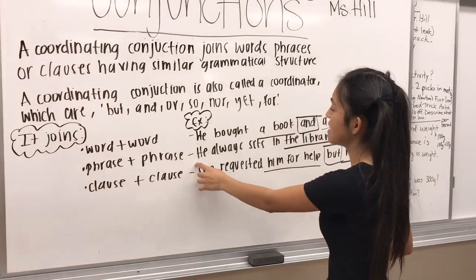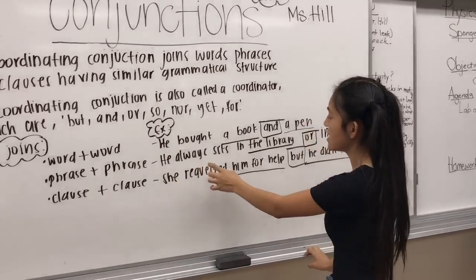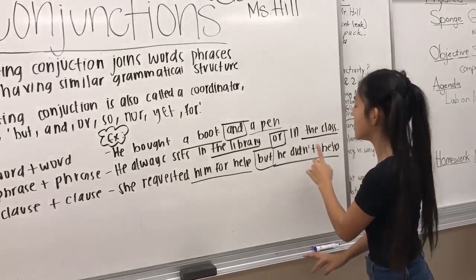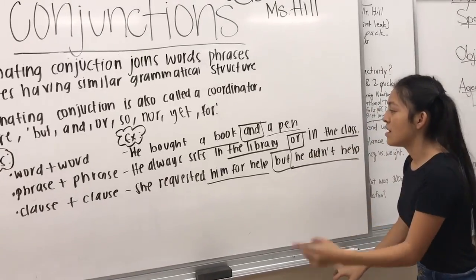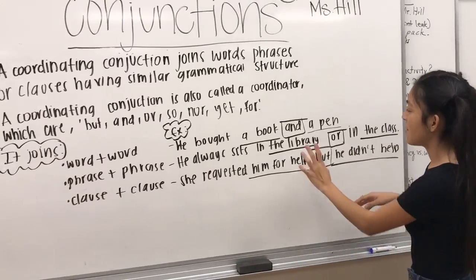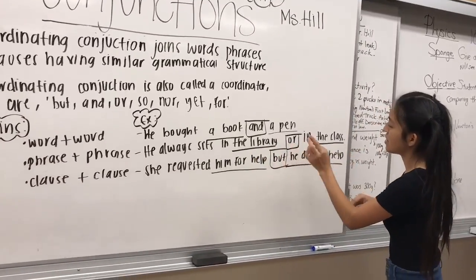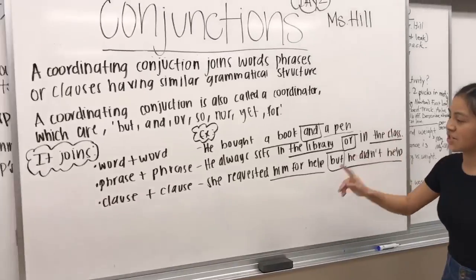An example of phrase plus phrase: 'He always sits in the library or in the class.' The library and the class are the similar elements being joined, and 'or' is the conjunction.